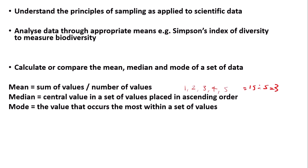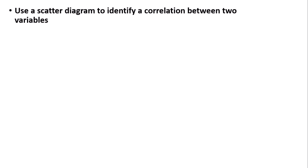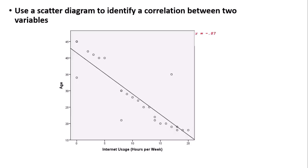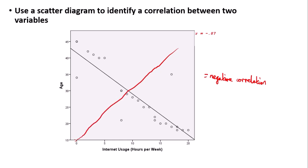You also need to use a scatter diagram to identify a correlation between two variables. For example, a scatter diagram investigating the relationship between internet usage in hours per week and age shows that as internet usage increases, age decreases — this is a negative correlation. If the data points trend upward, that would be a positive correlation because both values increase together.